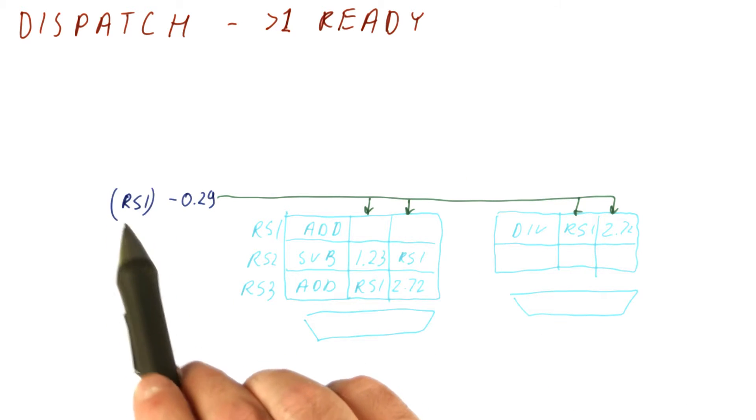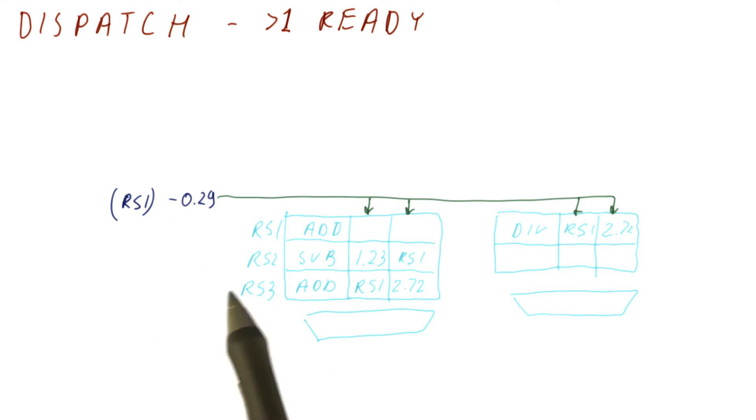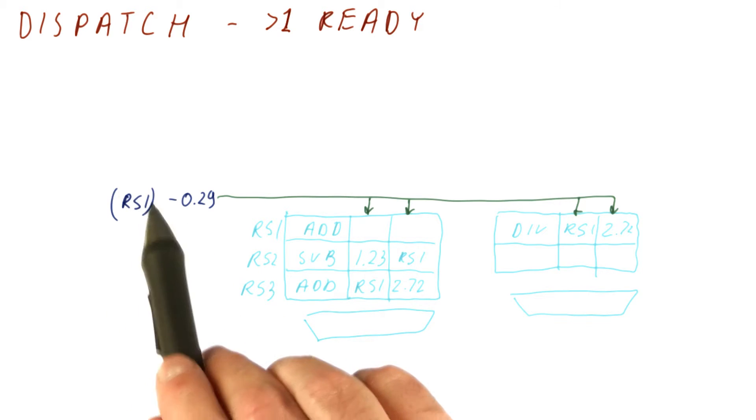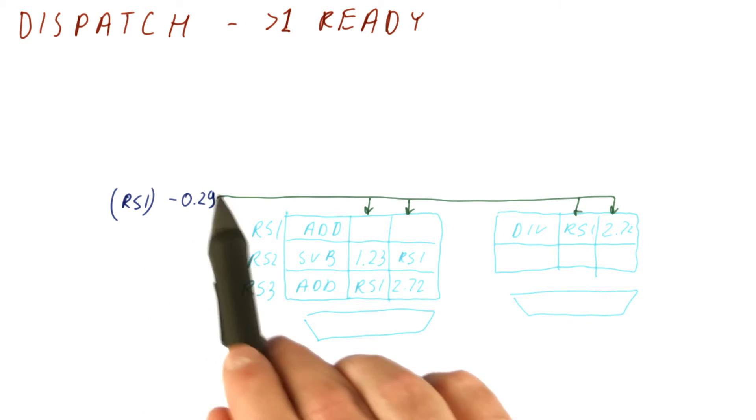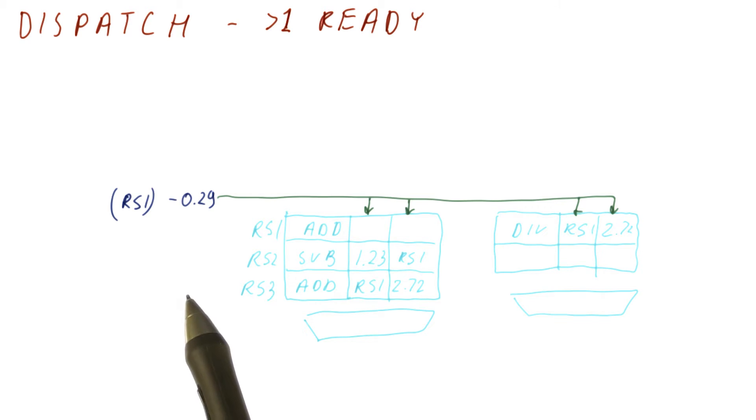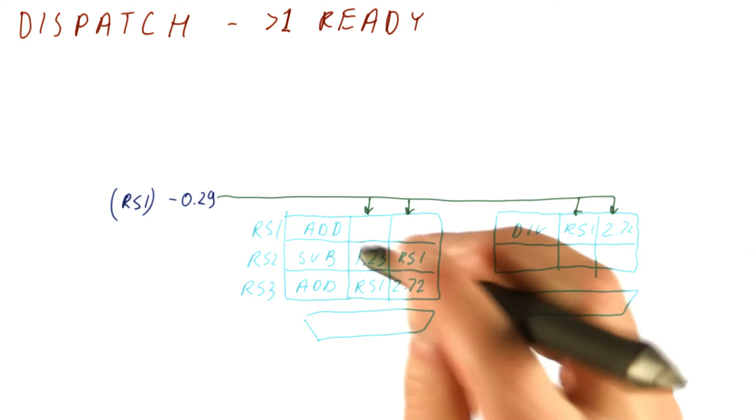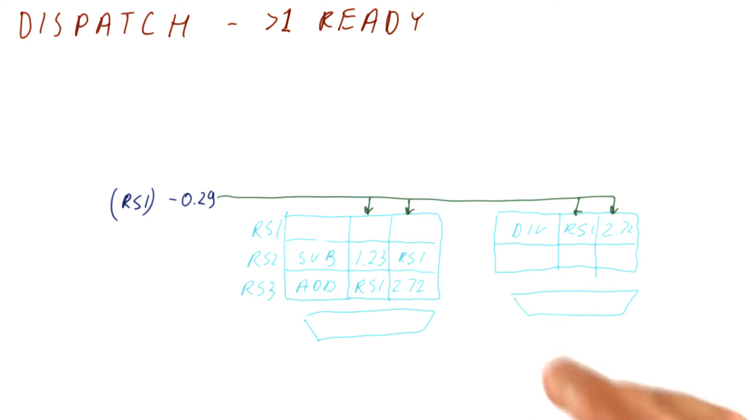Here's a situation similar to the previous case where reservation station one is broadcasting a result of minus 0.29. So we're still going to free reservation station one as before.